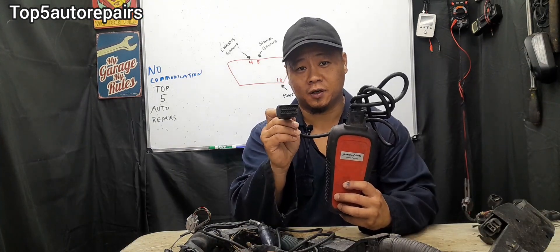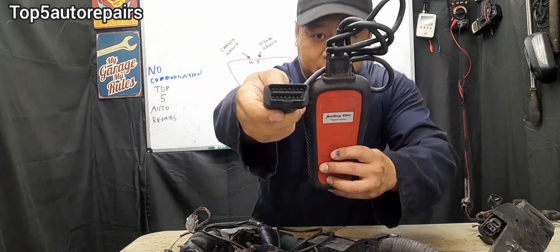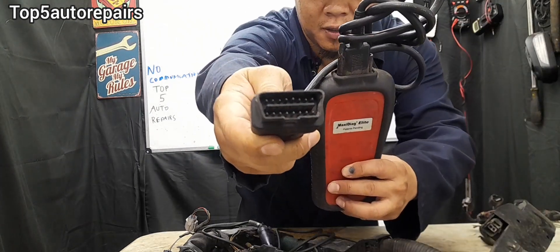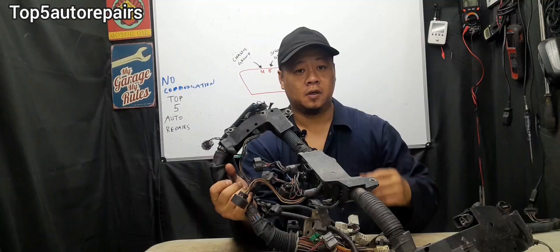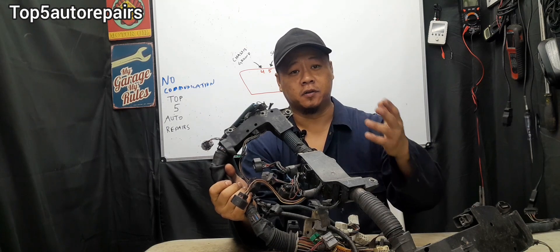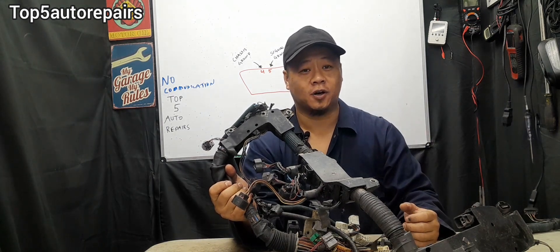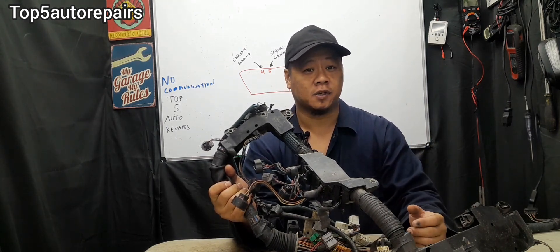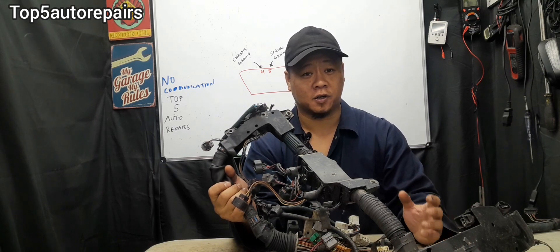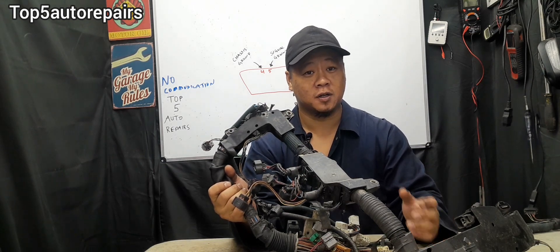In addition, check the pins on the scan tool — make sure none of the pins are bent. If you're getting no or lost communication codes and you're getting U0001 or U0010 codes, maybe you actually have a deeper issue.